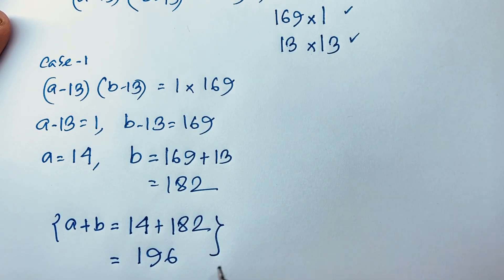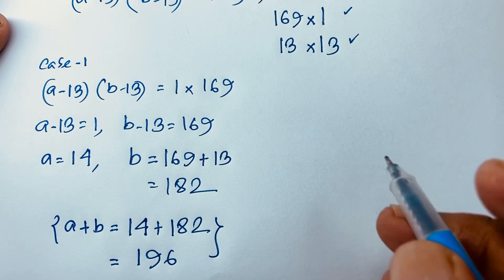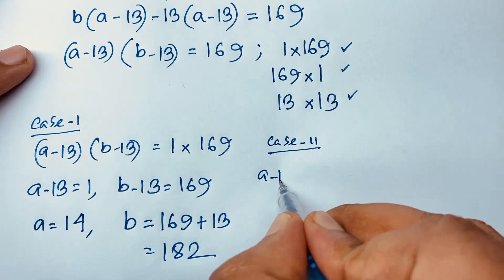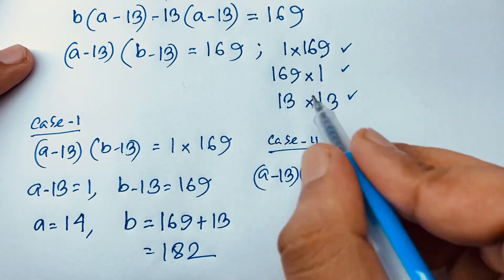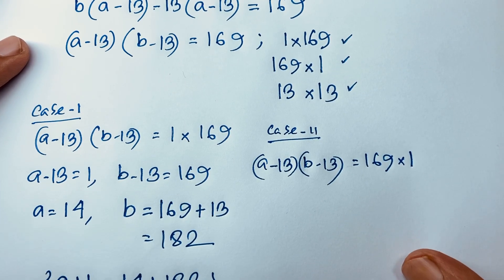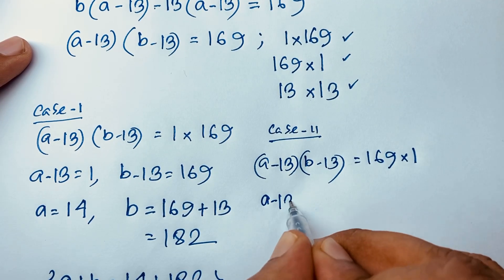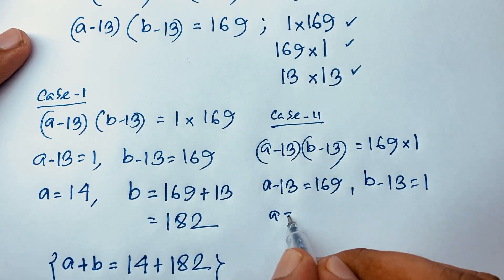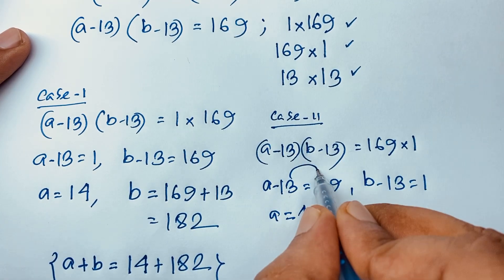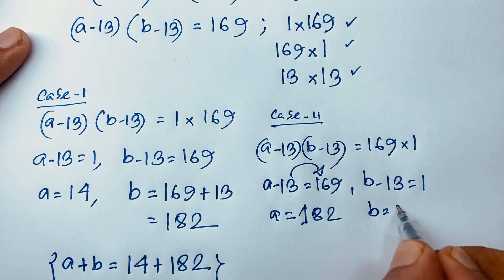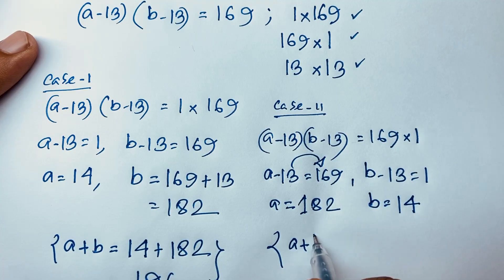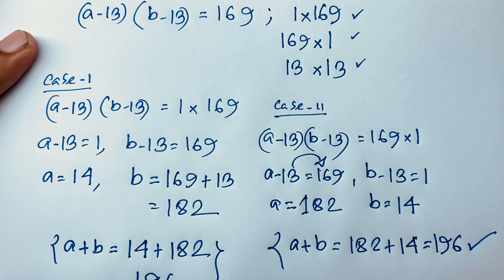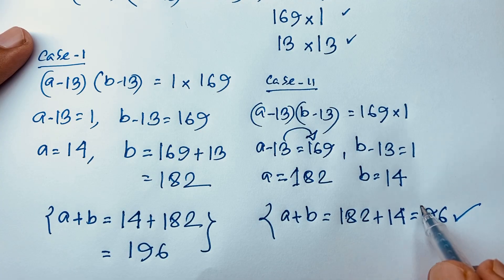Case 2: (A minus 13) times (B minus 13) is equal to 169 times 1. You can see here, A minus 13 is equal to 169, and B minus 13 is equal to 1. Then A is equal to 182 and B is equal to 14. So A plus B equals 182 plus 14, which is 196. We find our other solution is also 196.